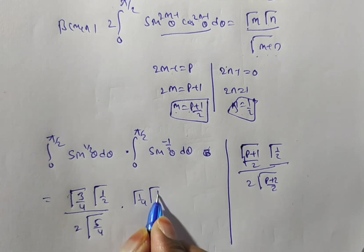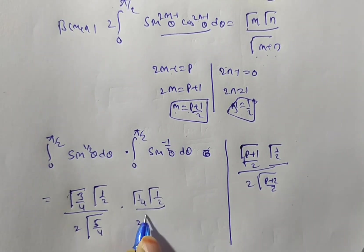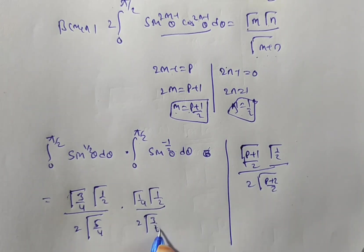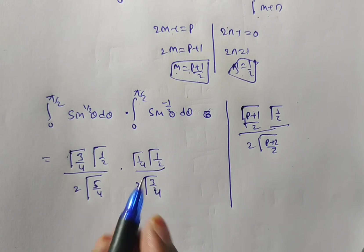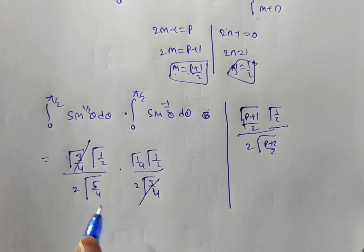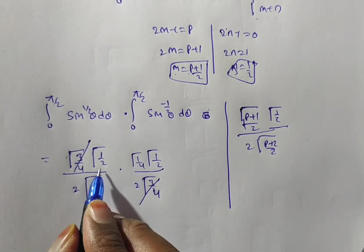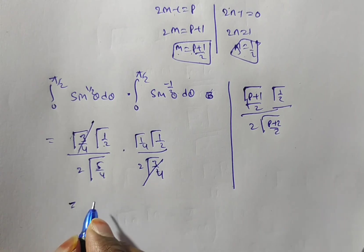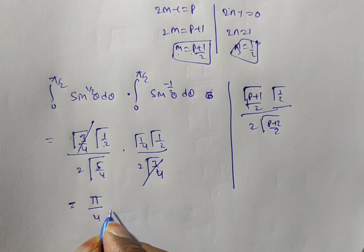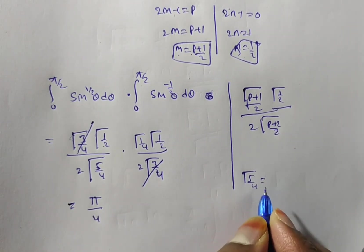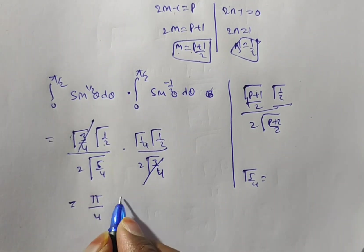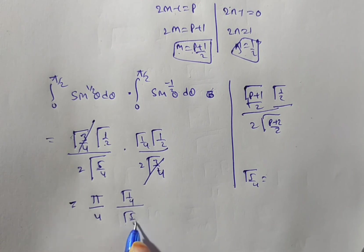We have γ(1/2) · γ(1/2) = √π · √π = π. The denominator becomes 4 · γ(5/4). Now γ(5/4) = γ(1 + 1/4) = (1/4) · γ(1/4), so in the denominator we get 4 · (1/4) · γ(1/4) = γ(1/4). The γ(1/4) terms in numerator and denominator cancel.